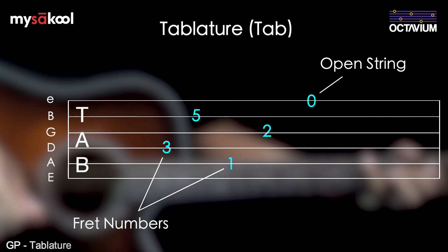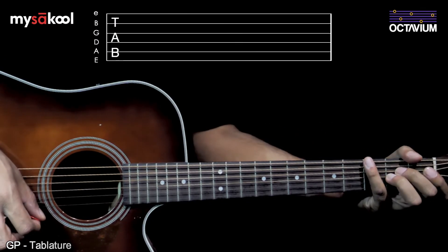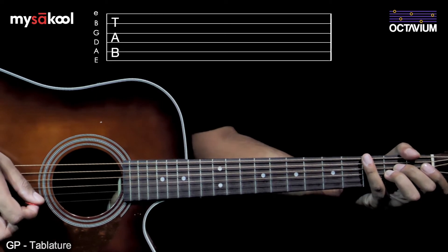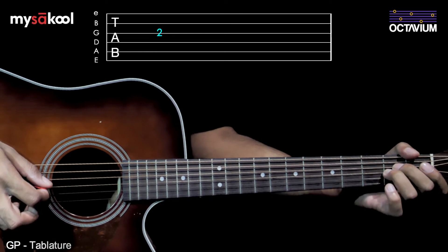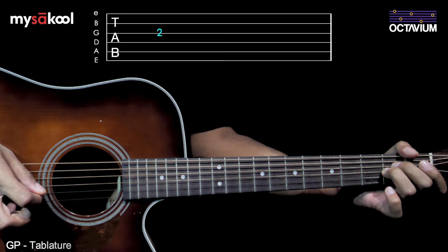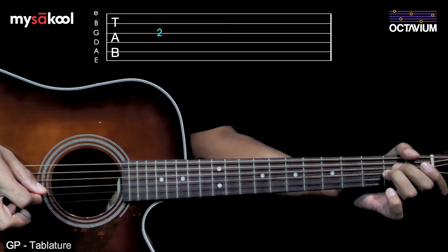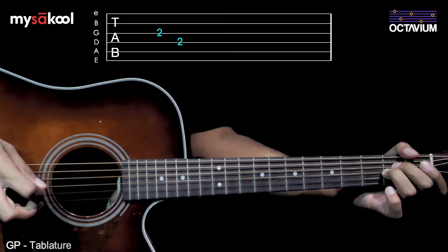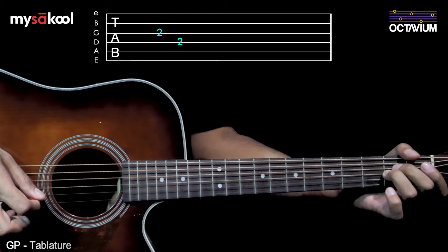Tab is meant to be read and played from left to right. For example, in the snippet on screen: play the G string while holding it at the second fret, followed by the D string at the second fret, and finally the open B string.